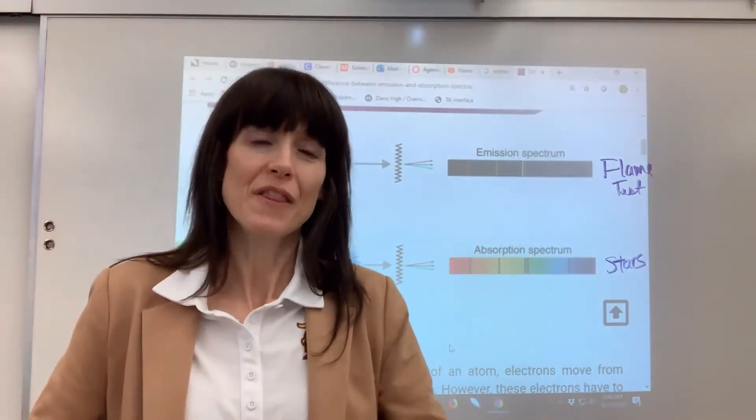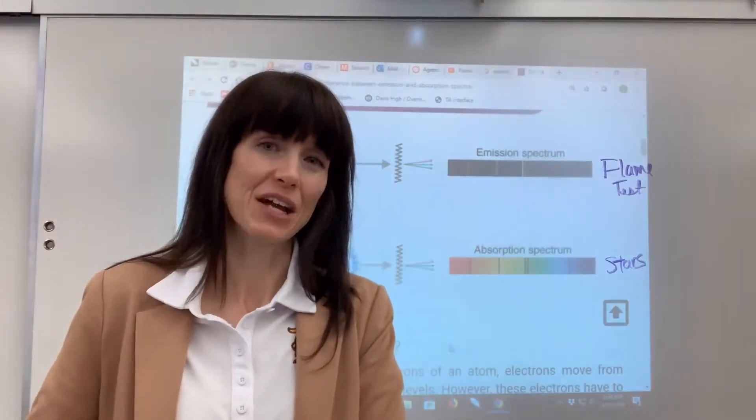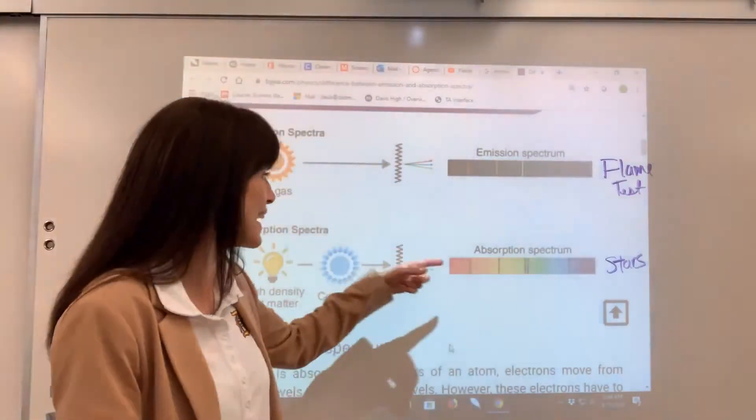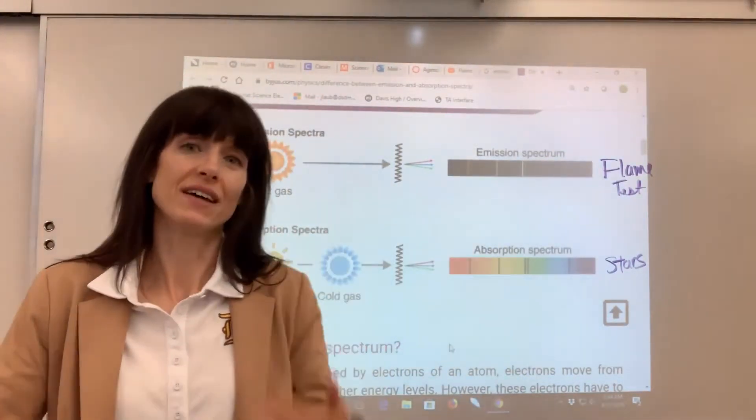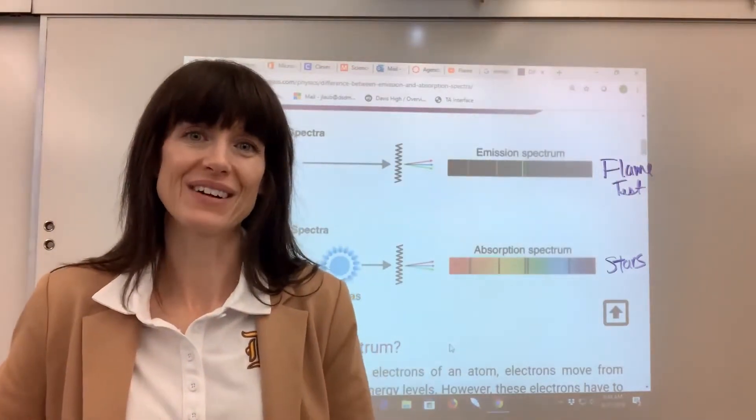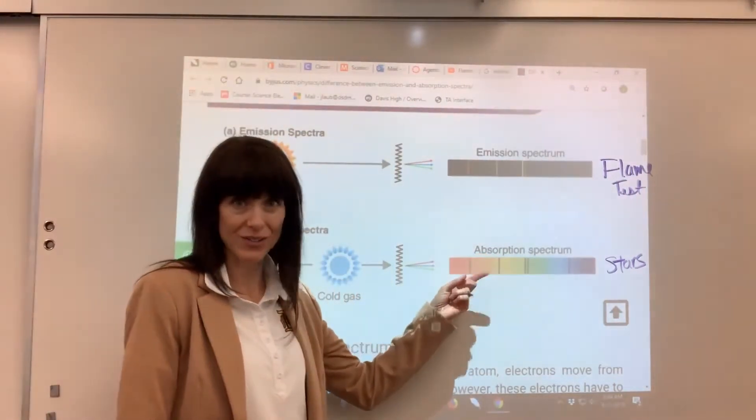Now this is kind of cool. The first place that scientists discovered helium was on the sun using absorption spectra. It wasn't until later that helium was found on planet Earth. So helium was first discovered by using absorption spectra.